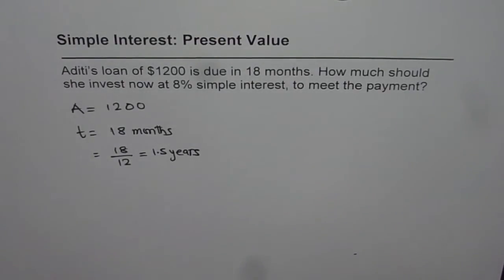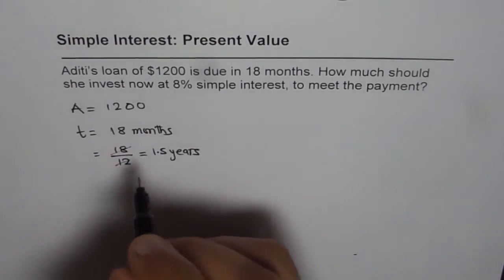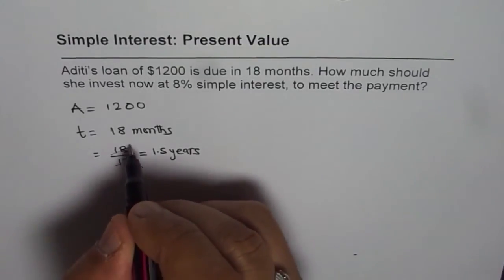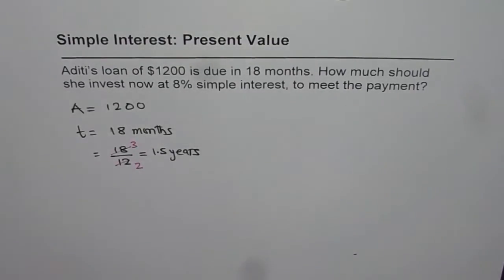So this you can simplify, dividing both by 6, which gives 3 over 2. So 1.5 years. You can use fractions or decimals.